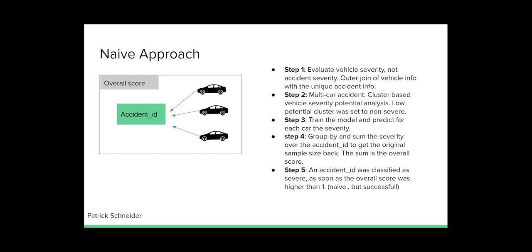Step two, in a multi-car accident, we make a cluster analysis over the involved vehicles and determine their severity potential. With low potential, the vehicle severity was set to zero. Step three, train a model on the vehicle severity and predict for each vehicle the severity. Step four, group by and sum the severity over the accident_id to get the original sample size back. Step five, in this naive approach, each accident had a summed score of all involved vehicles.